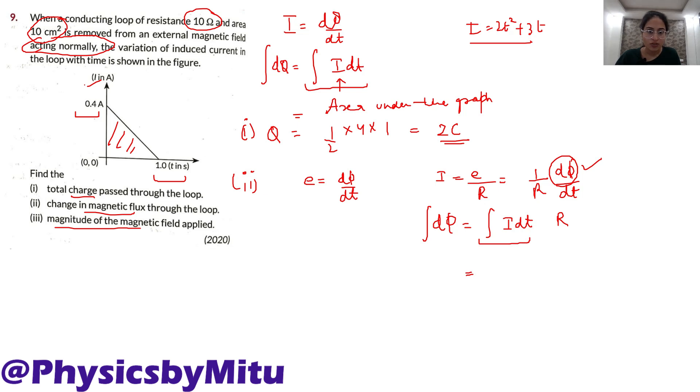We have just found charge. So this is 2 coulomb into, what is the resistance of the loop? 10 ohm. You can see 10 ohm. So put the value 20. This is total charge, or total, sorry, flux, which is 20 Weber. SI unit is Weber.